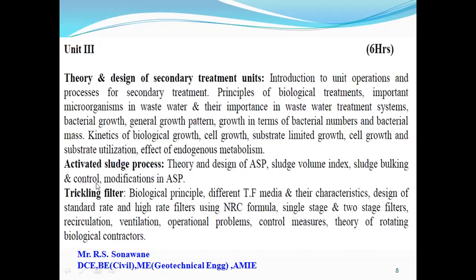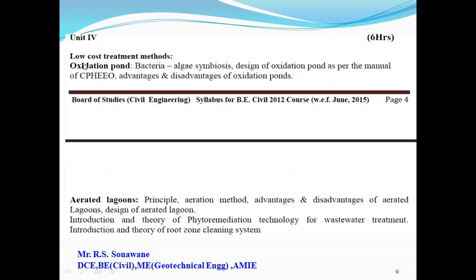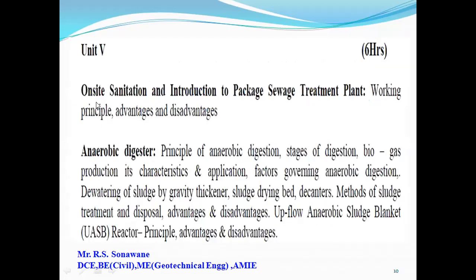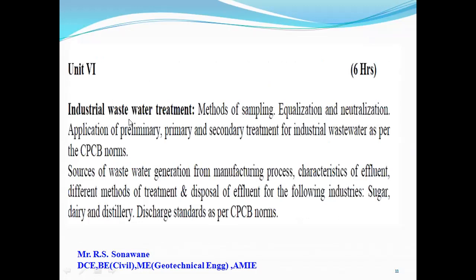In unit four, low-cost treatment methods — oxidation pond and aerated lagoon — are the two main parts, including bacteria-algae symbiosis process and aeration methods. In unit five, on-site sanitation: introduction of FICAS treatment plant and anaerobic digester. In unit six, industrial wastewater treatment — methods of sampling, equalization, neutralization, and sources of wastewater generation from manufacturing processes.